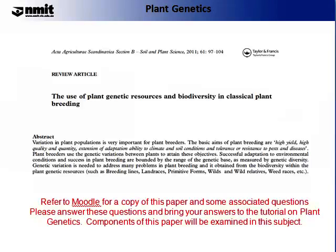A second resource I would like you to spend some time reading is a paper on the use of plant genetic resources and biodiversity in classical plant breeding. This is an excellent summary of classical plant breeding and how these technologies have evolved, with information specifically about variation and the role it plays in modern day agriculture — indeed one of the most important challenges that plant breeders have to face. Please refer to Moodle for a full copy of this paper. There are also associated questions; please answer these and bring your answers to the tutorial on plant genetics. Components of this paper will be examined in this subject.